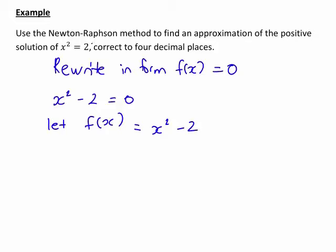And just a note, if we had rearranged it as 2 - x² = 0, that would also have worked. Now, let's think about our formula for the Newton-Raphson method.